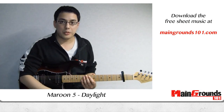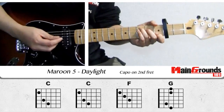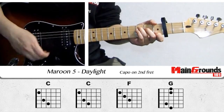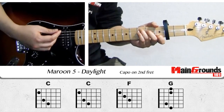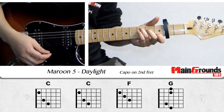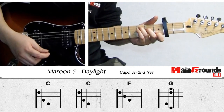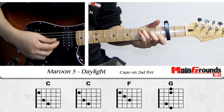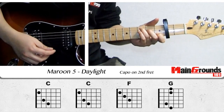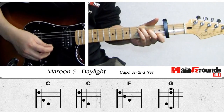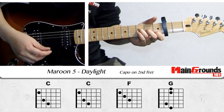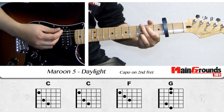Let's start with the verse. The first chord is the C chord, then another C chord, then an F, then the G.